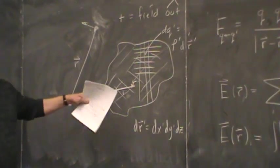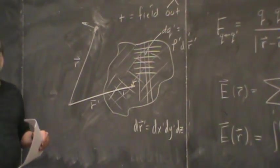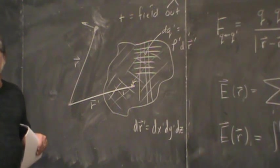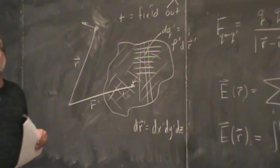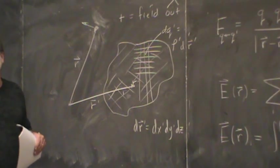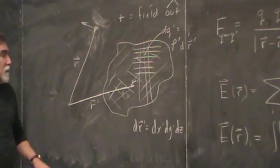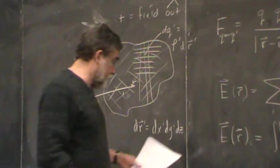The primed coordinates are different variables than the unprimed coordinates. I never integrate over r in this case; I'm integrating over the position r prime of the charge, where the charge is. That distinction between the prime and unprimed coordinates is one that causes problems for a lot of students in this class and also in honors physics.